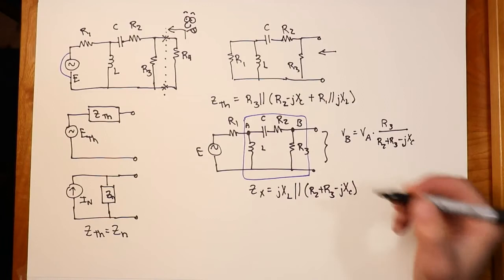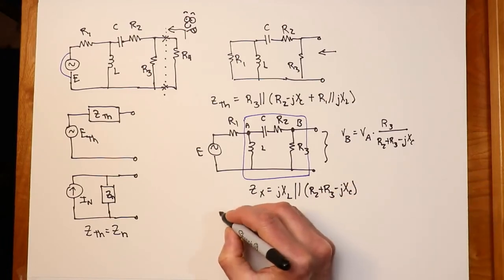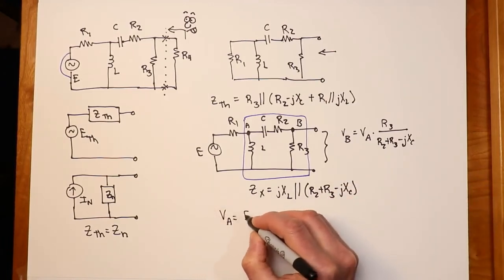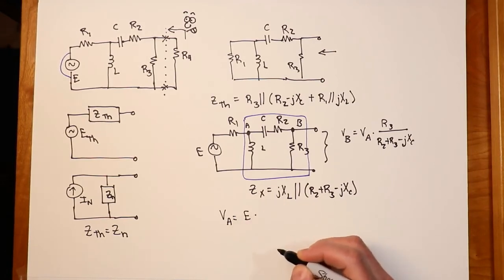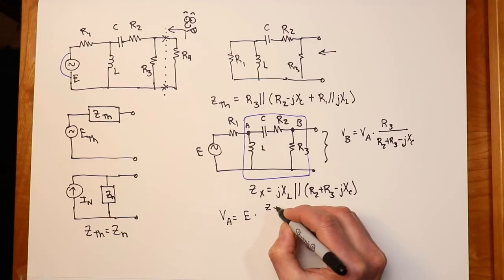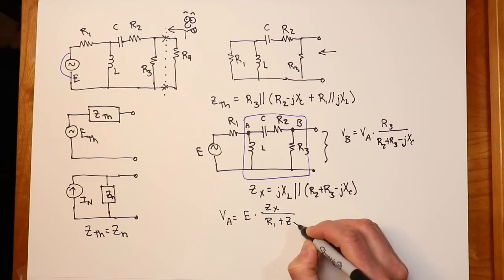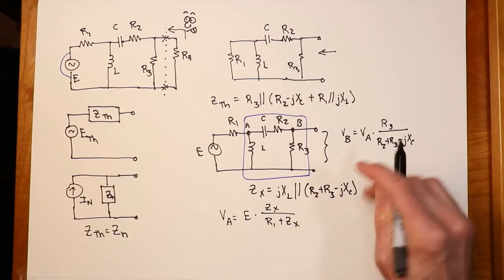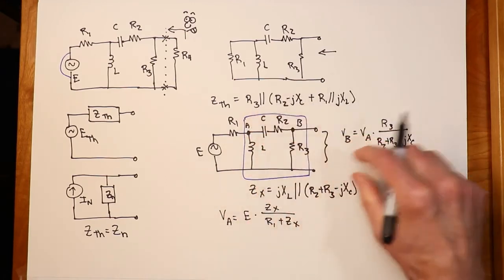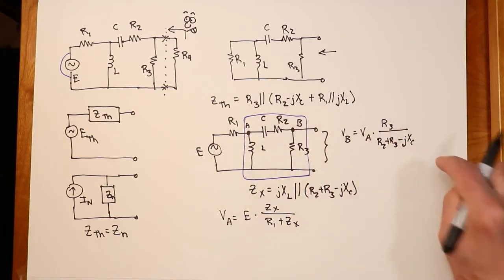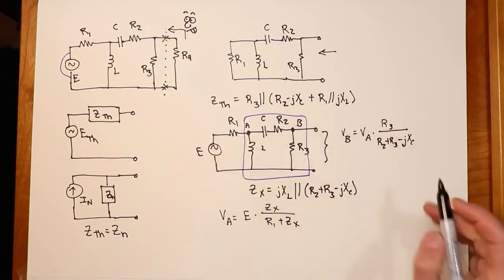So I can get VA as just being the source E times the thing we're interested in, which is Zx, divided by the whole thing, which is R1 plus Zx. So that's my VA voltage, which again, we divide down to get VB. VB is E-Thevenin.